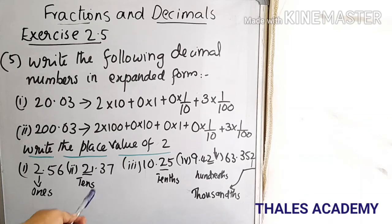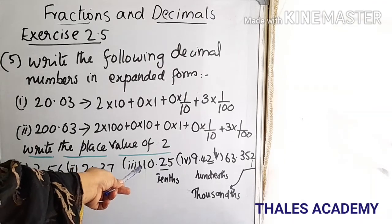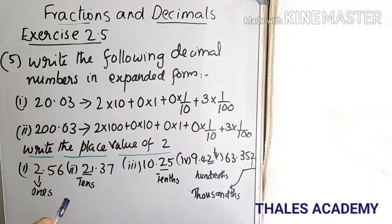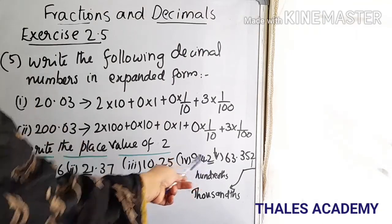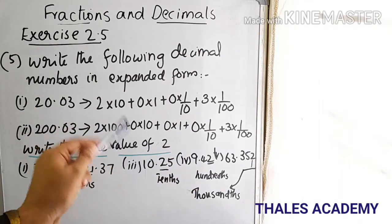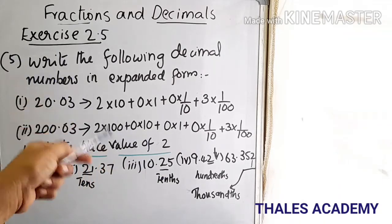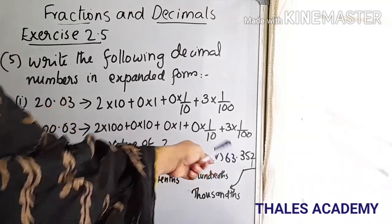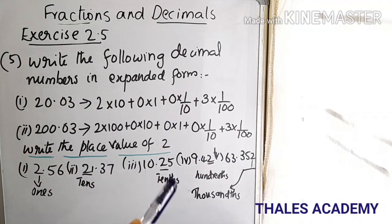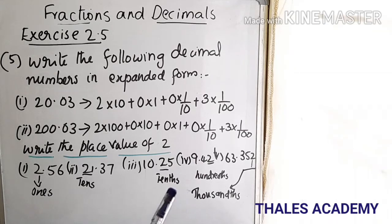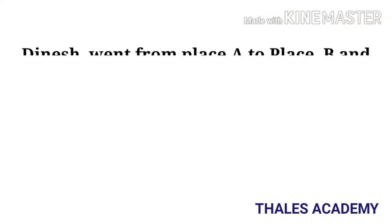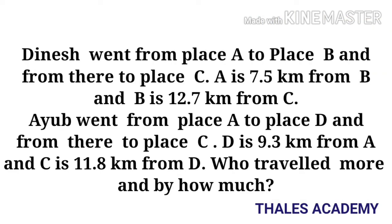In 9.42, the digit 2 lies in the hundredths position — that is 2 into 1/100. In 63.352, the digit 2 also lies in the thousandths position — written in expanded form as 2 into 1/1000.